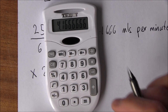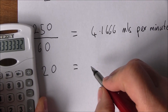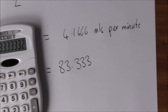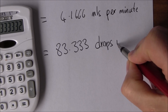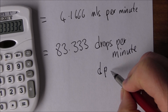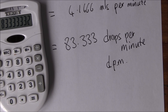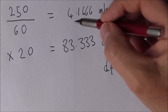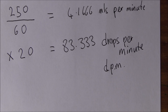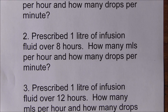That gives us 83.333, or 83 and a third drops per minute. Rounding down, we would set it to 83 drops per minute. Now let's try another example: 1 litre of infusion fluid over 8 hours — how many mils per hour and how many drops per minute?